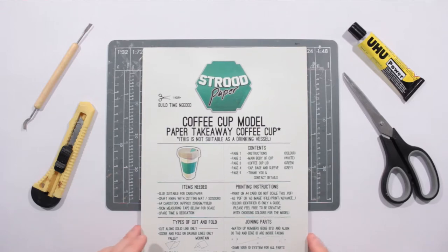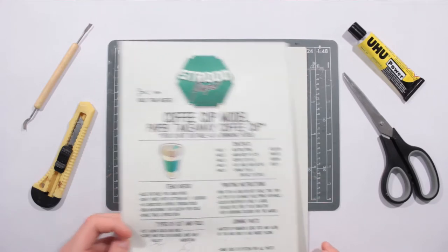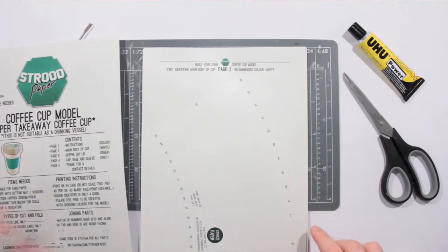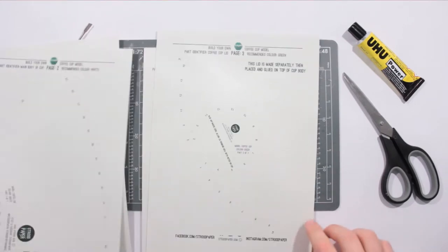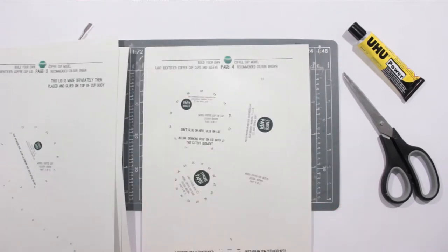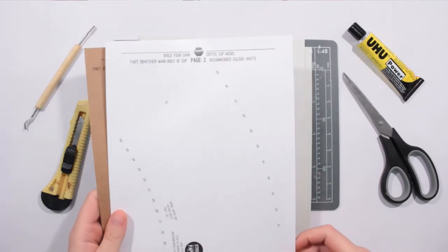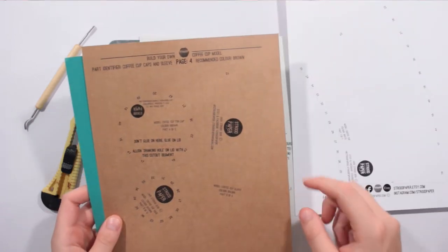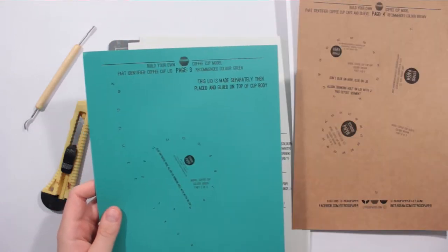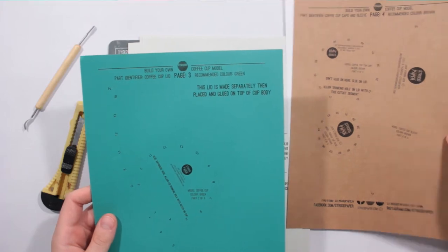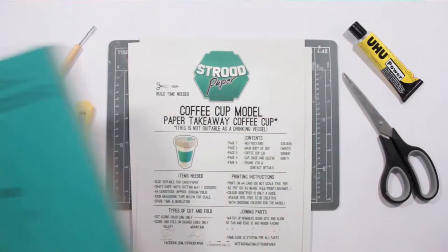What you can see here is the printed off kit. You get the instructions, the main body of the cup, the lid, the base, and the sleeve. I've gone ahead and printed them off in different colors: white for the main body of the cup, brown for the sleeve and the base, and then green for the lid. You can do them in any colors you like, but that's what I've done.